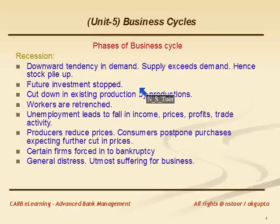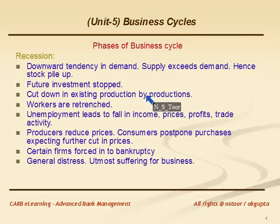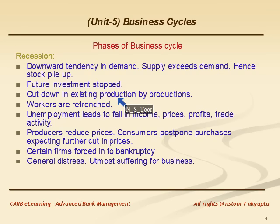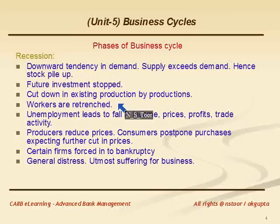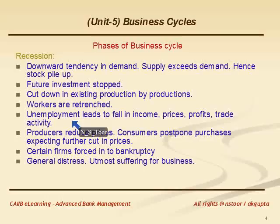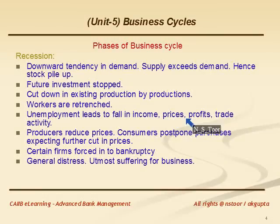As a result, future investment stops and producers cut down existing production — there is a cut-down of existing production because of oversupply. When production is reduced, some workers have to be retrenched. This also leads to unemployment, and unemployment leads to a fall in income, fall in prices, fall in profits, and fall in trade activity.